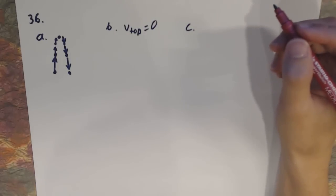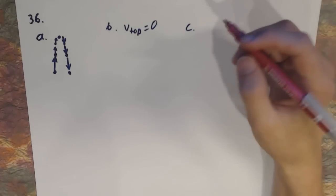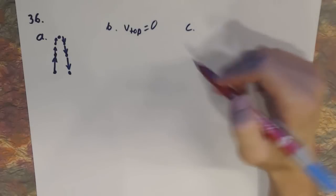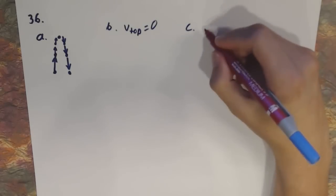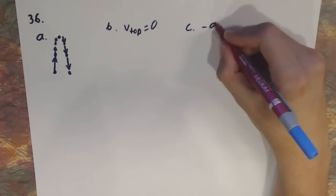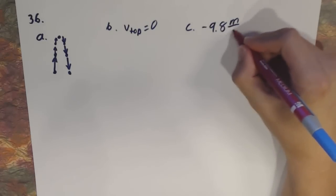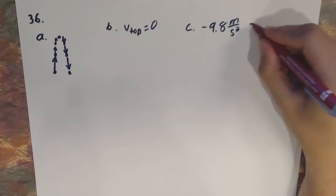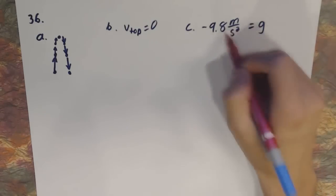Part C asks: what is the acceleration when it reaches its maximum altitude? Not just at its maximum altitude, but for the entire duration of the ball's motion, it's going to have an acceleration of negative 9.8 meters per second squared, which is equal to gravity. So it's just the acceleration due to gravity.